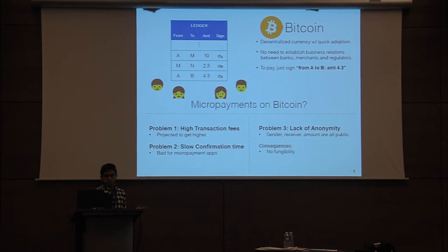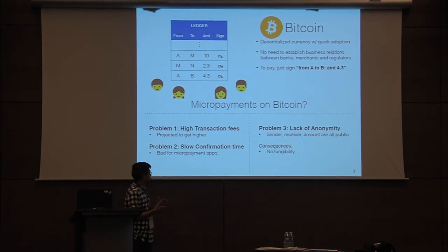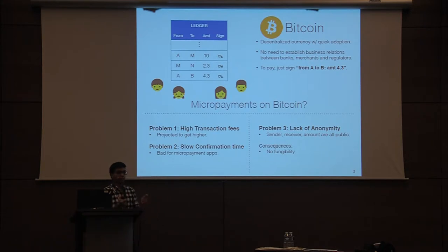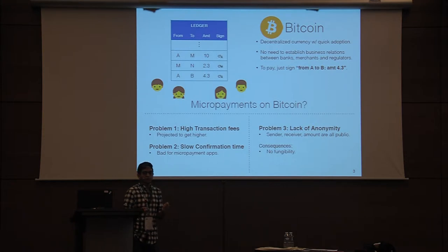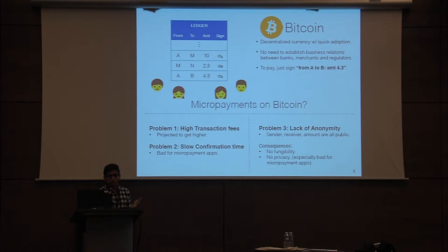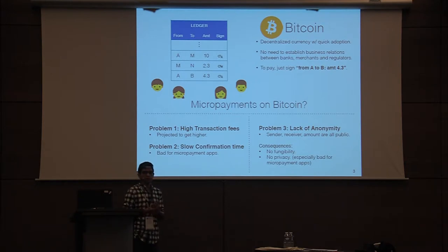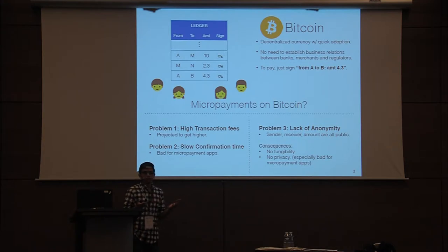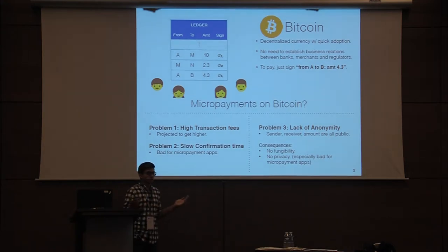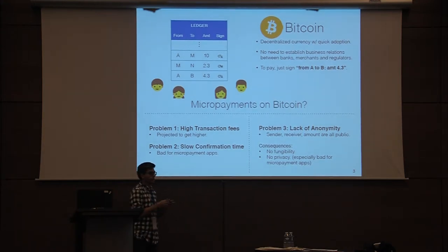This has two consequences. The first is that you don't have fungibility — this just means that even if I have two coins of the same denomination they might not be treated equally depending on their transaction history. The second, more obvious issue is that of privacy, and this is particularly bad for micropayment applications. For instance, you don't want your browser history to be available for everybody in the world to see on this global ledger.